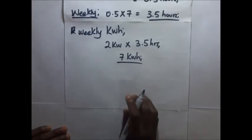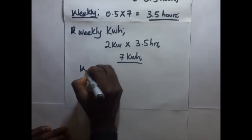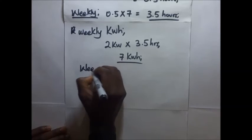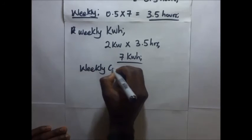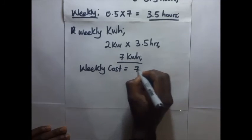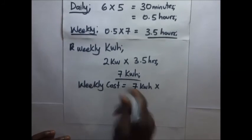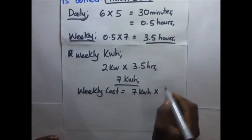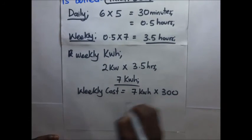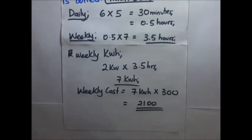After getting the 7 kilowatt hours, we find the weekly cost: 7 kilowatt hours multiplied by the cost per kilowatt hour, which is 300, gives us 2,100. That is the weekly cost. This brings us to the end of this video.